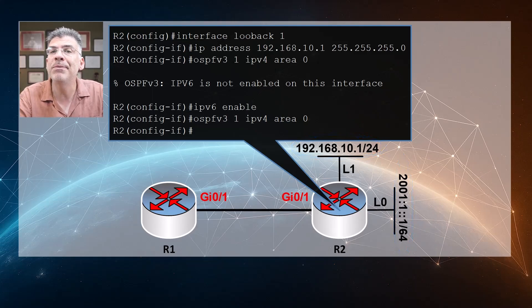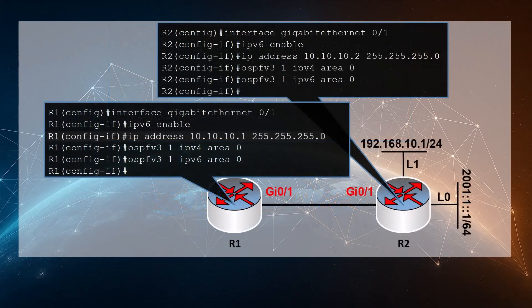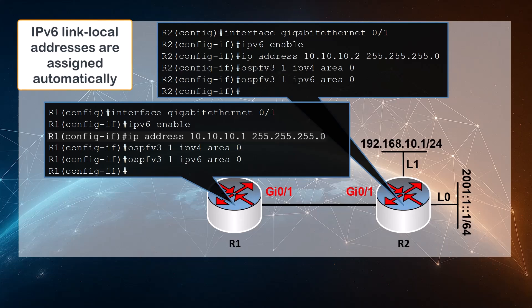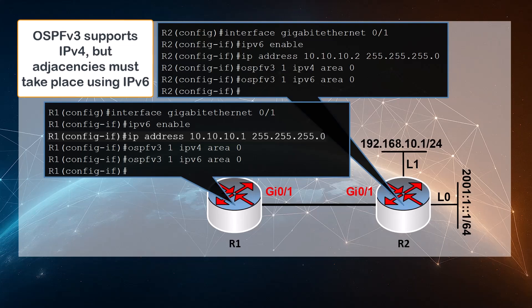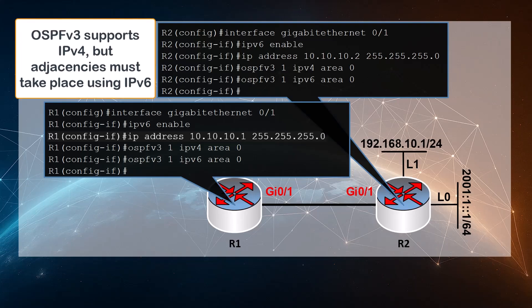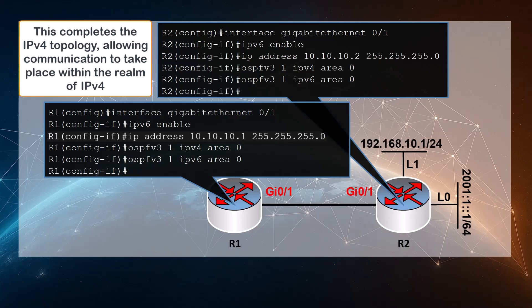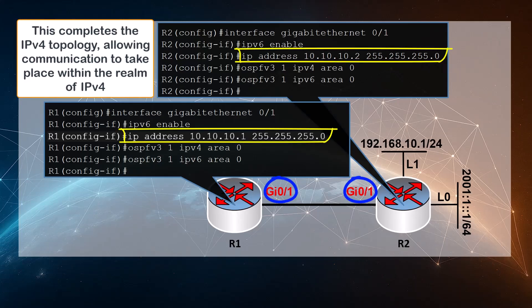But we don't yet have an OSPF adjacency — let's configure that now. For both R1 and R2, we go into the GigabitEthernet 0/1 interface and enable IPv6. We don't need to assign an IPv6 address since link-local addresses will be assigned automatically and used for the OSPF version 3 adjacency. Remember, OSPF version 3 can share IPv4 address spaces, but the OSPF adjacencies must be based on IPv6 communication. In order for R1 to reach the loopback 1 interface, we must also assign IPv4 addresses to the GigabitEthernet interfaces on both R1 and R2.